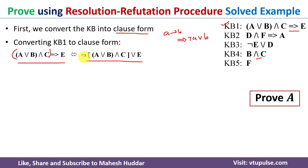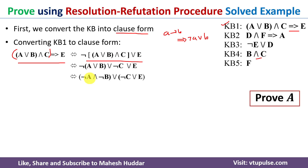Next, I will apply De Morgan's law and bring this negation inside. It will become negation of A or B, and this AND will be replaced with OR. C will become negation of C or E. Then I will take that negation inside again — it will become negation of A, the OR becomes AND, and negation of B, which I have put into one bracket.